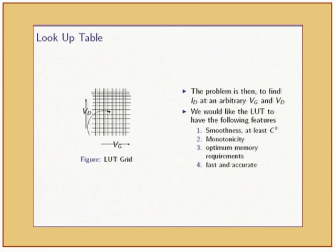You would ideally like the interpolate function to be smooth. At least the first derivative should exist. This is what is known as C1 class. In MOSFETs, it's a requirement. It's a physical device, so the current is generally monotonic. We want the interpolation to be monotonic. From an implementation point of view, we want things to occupy least memory, and they should be fast and accurate.